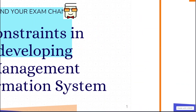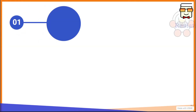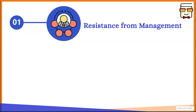The first constraint that becomes a hindrance in developing an MIS is the resistance from the management itself. If the top level management of any organization does not want to purchase or develop an MIS, then it becomes very difficult to implement it. The reason may be that the management does not want to adopt a new method of doing work, as they are very comfortable in the current procedure.